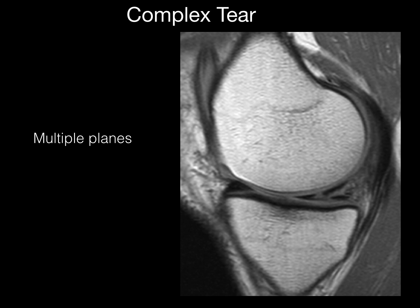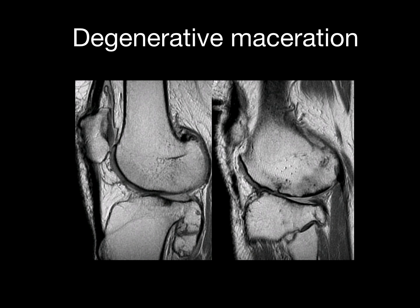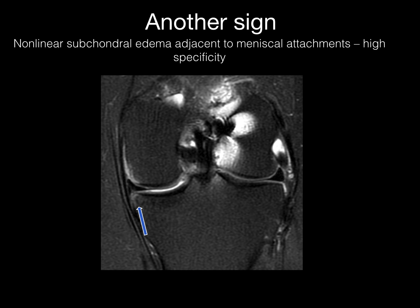Complex tears occur when you have a combination of the previously described tears and occur in multiple planes. Degenerative maceration refers to when you have bad arthritis of the knee and the meniscus is totally degenerated or absent. An example shows a large osteophyte and absence of the meniscus. Another sign to look for is nonlinear subchondral edema adjacent to the meniscal attachments, which has a high specificity for meniscal tear.